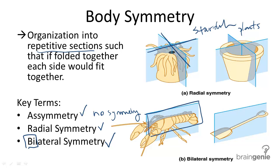Bilateral symmetry can be seen in lobsters, insects, mammals, fish, and other sophisticated organisms.